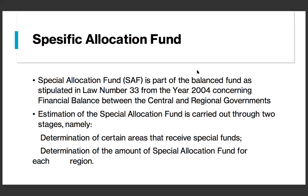Now let's jump into the Specific Allocation Fund. This is part of the Balance Fund stipulated in Law Number 33 of 2004 concerning financial balance between the central and regional government. It is funded originating from the state budget revenue, allocated to certain regions in order to fund special activities as regional affairs and in accordance with national priorities.